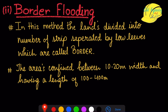The next kind of water application technique is border flooding, which is the next step beyond free flooding. Here we try to control the quantity of water applied to the field by dividing the land into a number of strips or borders. Each strip is confined to a width of 10 to 20 meters and extends to a length of 100 to 400 meters.